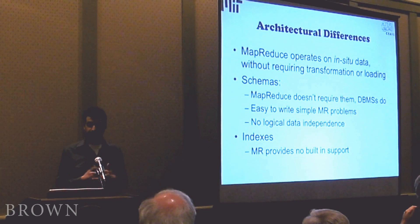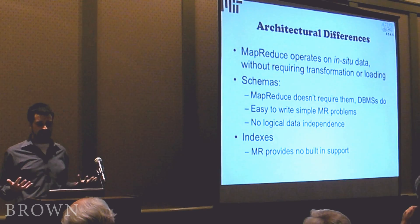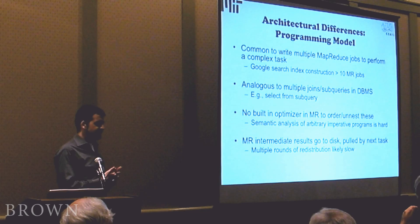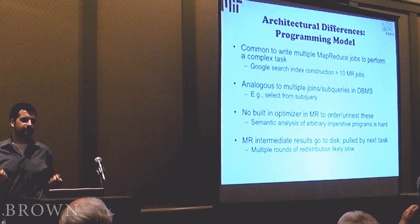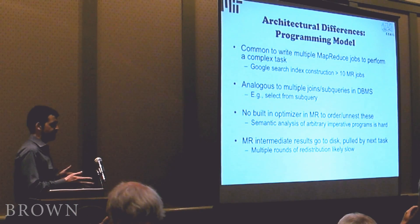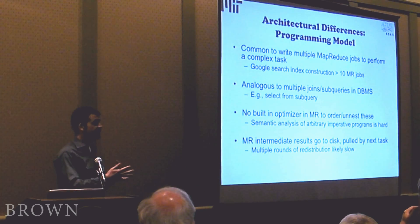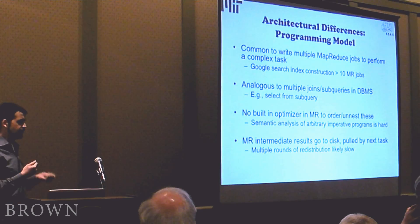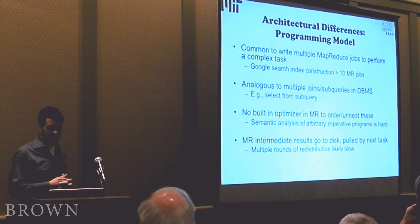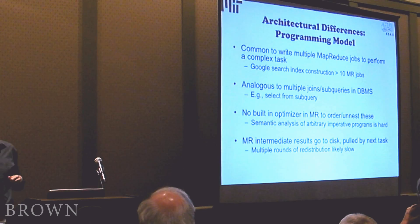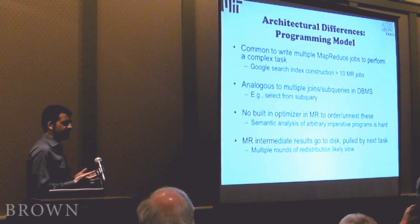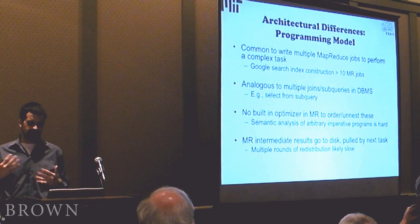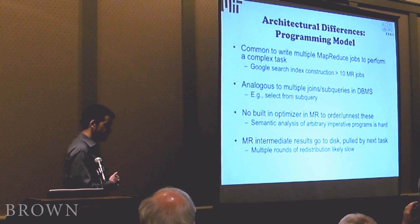MapReduce doesn't provide any support for indices at a base level — because the data has no assumed structure, there's no built-in support for indexing. The programming model leads to relatively convoluted programs. Although at first the model looks very simple, the only way to get parallelism out of MapReduce is to write MapReduce jobs, so if you want good parallel speedup you have to figure out how to express your computation as a large series of connected MapReduce phases. Purportedly the Google search index construction involves more than ten MapReduce phases — very hairy to wrap your head around. It's analogous to having multiple joins or subqueries in a database system. Unfortunately in MapReduce there's no built-in optimizer to handle ordering or unnesting these nested expressions, and doing semantic analysis to reorder these things would be very hard because these are imperative programs and it's not clear when one commutes with another.